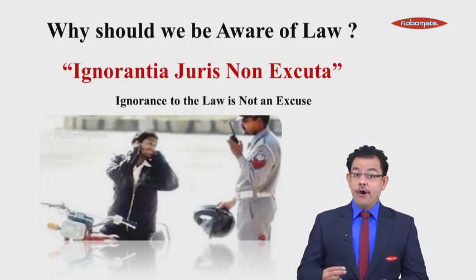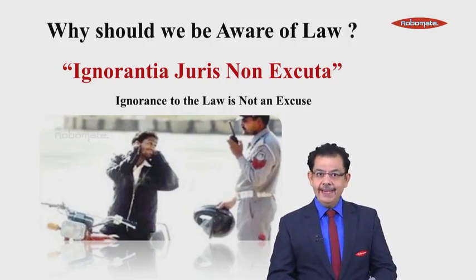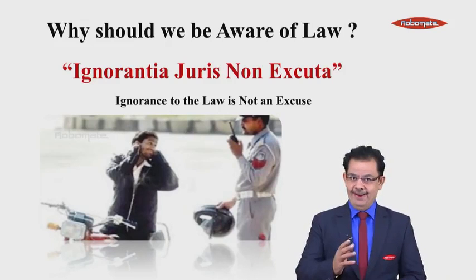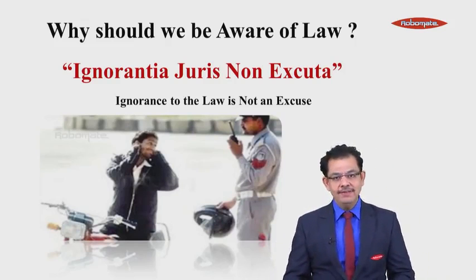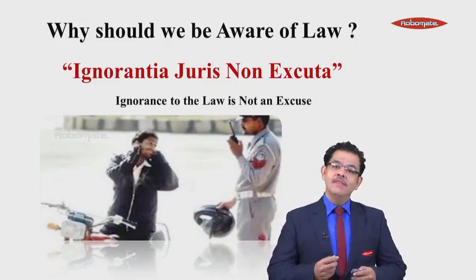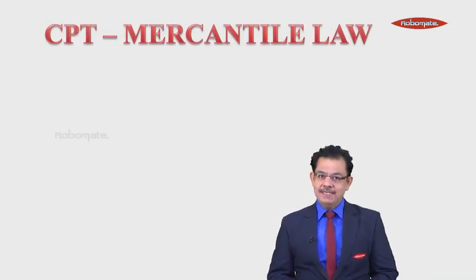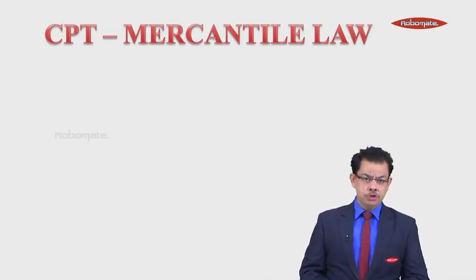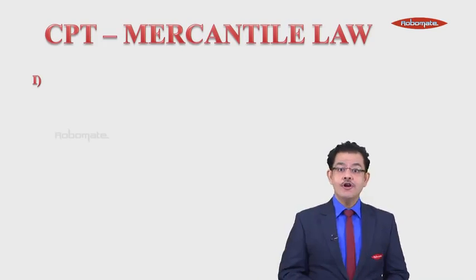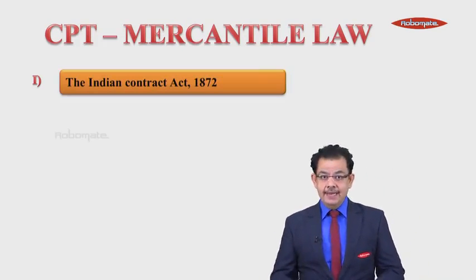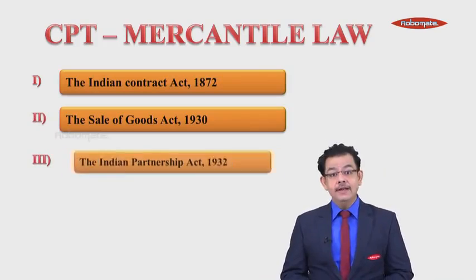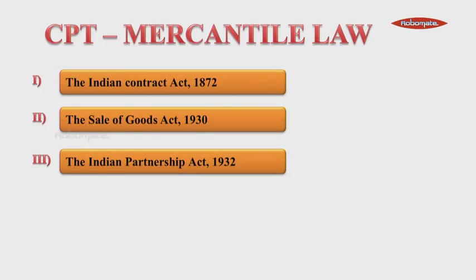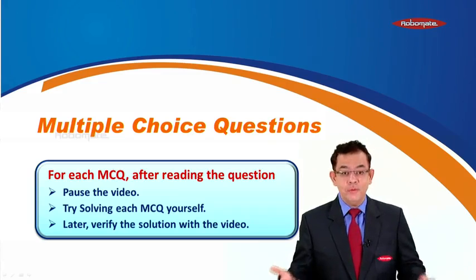So when we have these two points about the law zipped up in our mind — that is, what is law? Conduct. Should we be aware of the law? Yes, because of the maxim Ignorantia juris non excusat — now we can proceed with CPT Mercantile Law. Your CPT Mercantile Law comprises three acts: the very first one is the Indian Contract Act of 1872, the second act is the Sale of Goods Act 1930, and the third act is the Indian Partnership Act 1932.